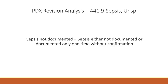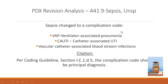The issue of sepsis documented only once and never confirmed is something to discuss at your facility — if the doctor says sepsis one time, are you going to code it, or query? This seems to be quite common. Other sepsis revisions involved changing to a complication code — for example, ventilator-associated pneumonia, catheter-associated UTI, or vascular catheter bloodstream infection. When sepsis is due to any of these situations involving a mechanical catheter or ventilator, you must use the complication code as principal diagnosis and then the A41 code. The coding guideline specifically addresses this situation.